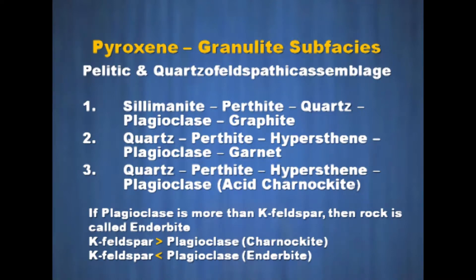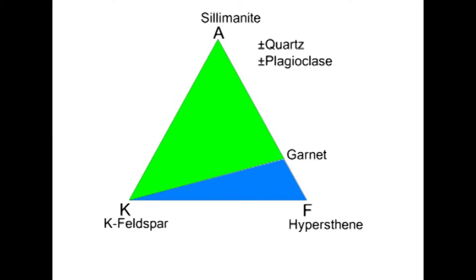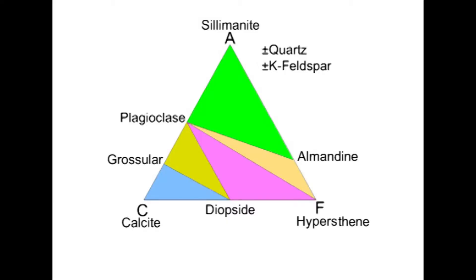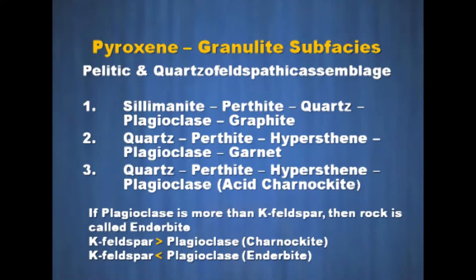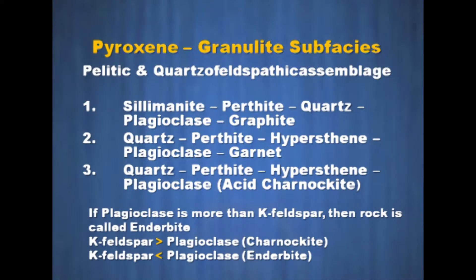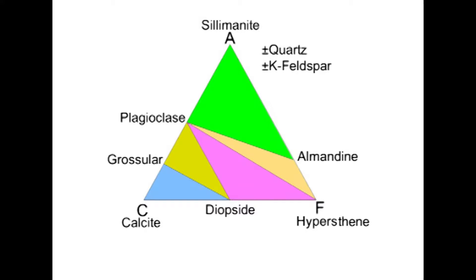Second is quartz, perthite, hypersthene, plagioclase, garnet. Third important assemblage is quartz, perthite, hypersthene, plagioclase — also known as acid charnockite. If plagioclase is more than potassium feldspar, then the rock is called enderbite. If potassium feldspar is more than plagioclase with presence of hypersthene plus quartz, the rock will be charnockite. Vice versa, if potassium feldspar is less than plagioclase, then it will be enderbite, also known as basic charnockite.